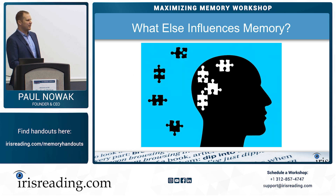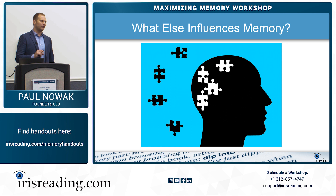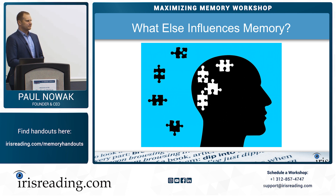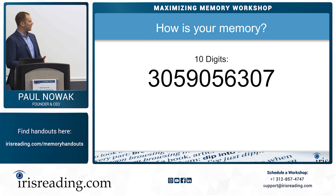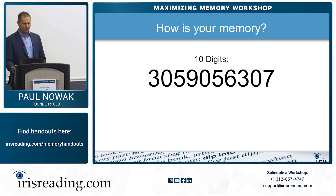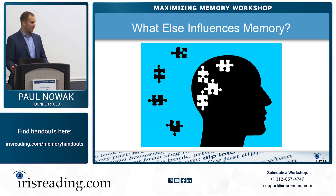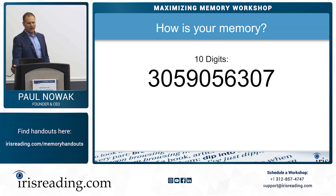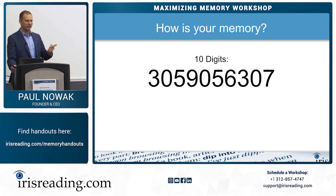Let's think about your short-term memory. Say I show you these 10 digits — 3, 0, 5, 9, 0, 5, 6, 3, 0, 7. If you look at it long enough, you'll memorize it, and if you repeated it enough, you would get it. But 10 digits is a little bit of information overload for your brain. You can get it with enough repetition, though.